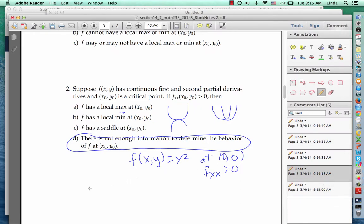So there's not enough information to determine the behavior just from f sub xx, and in fact, there's not even enough if we just consider f sub yy. Instead, we have to consider the discriminant.